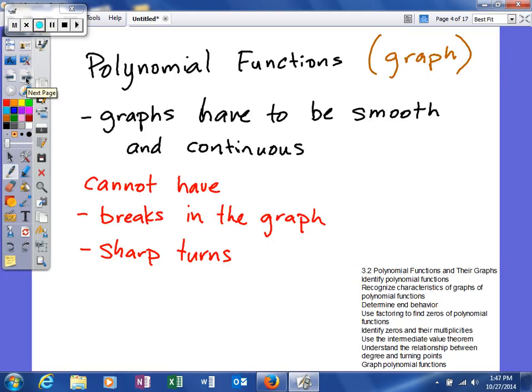The next thing we're going to look at is polynomial functions in terms of a graph. With a graph, your graphs have to be what they call smooth and continuous. What that means is you cannot have breaks in the graph, nor can you have sharp turns.